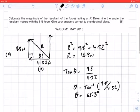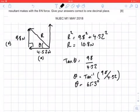Now remember, that's the angle to the horizontal, so the angle to the 8 newton force will therefore be 90 degrees minus that, which is 24.7 degrees.